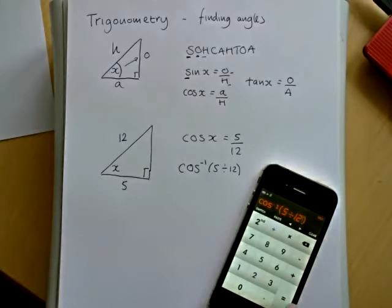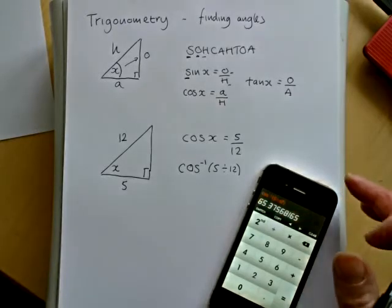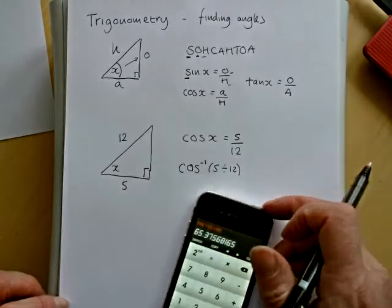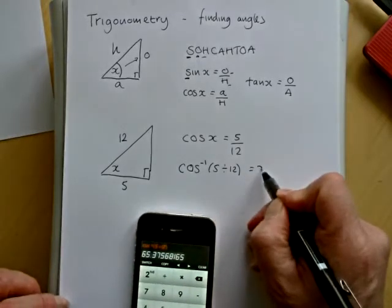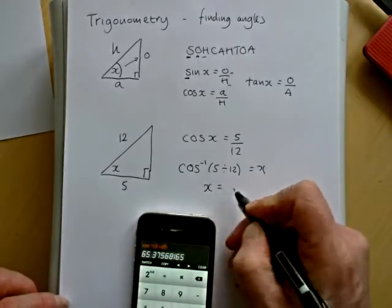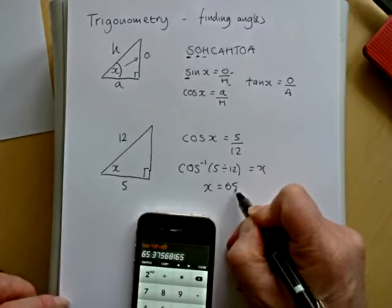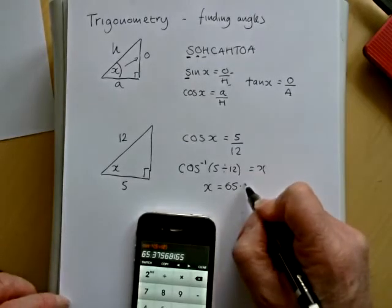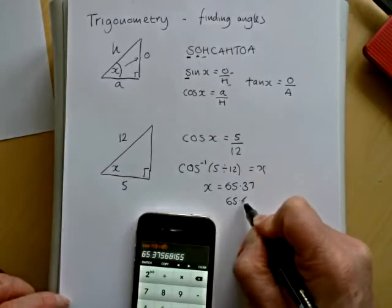Now press equals, it should give me the correct angle. And it's saying it comes from 65.37. So we have got x equals 65.37, and I'm going to round that to one decimal place.